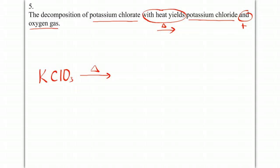With heat we'll yield potassium chloride: K plus one, chloride is minus one, plus one and minus one cancel. And oxygen gas, oxygen is a diatomic so it needs a two.